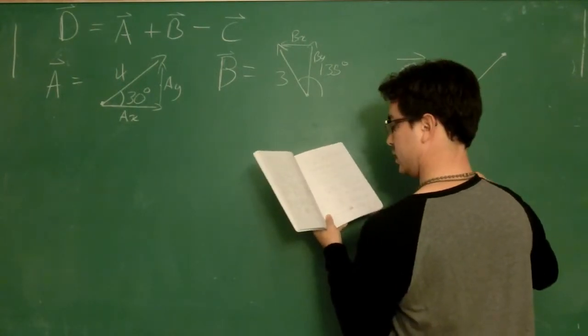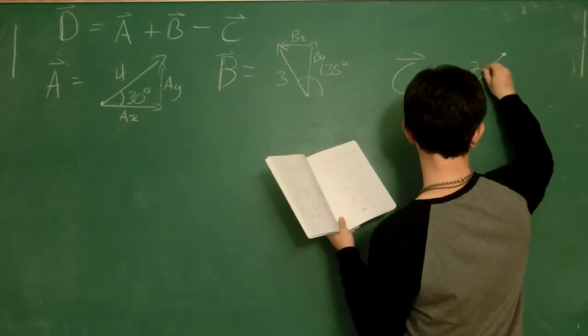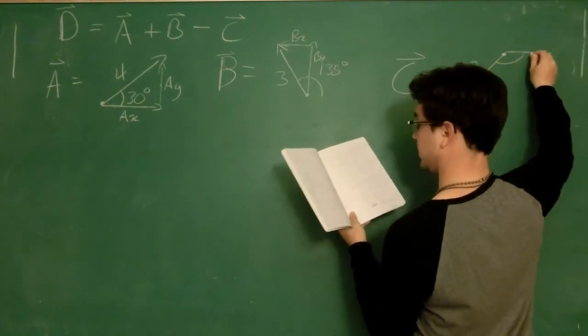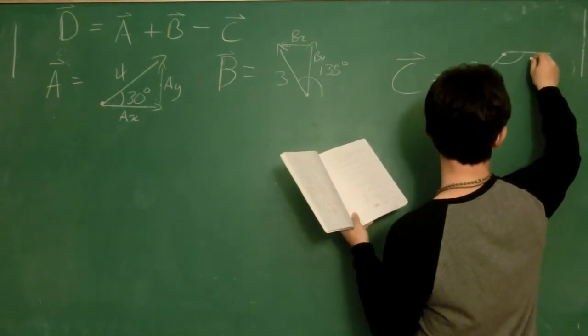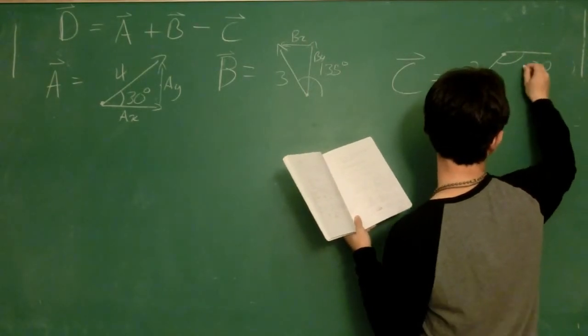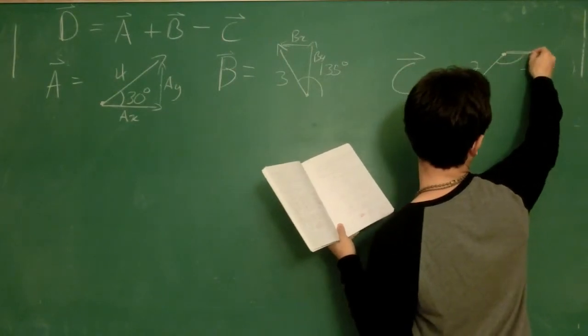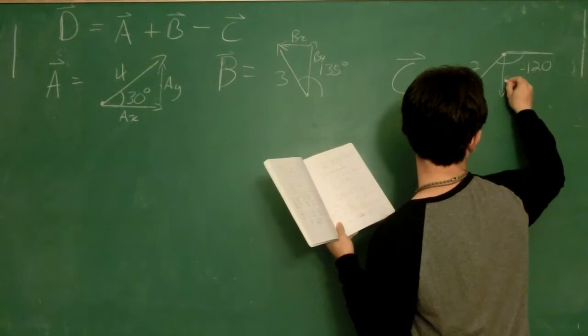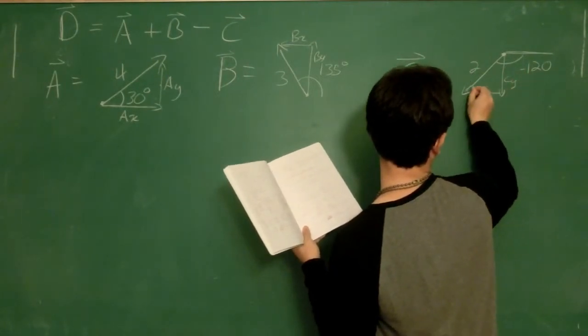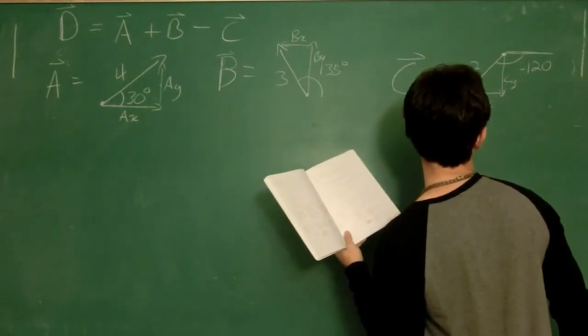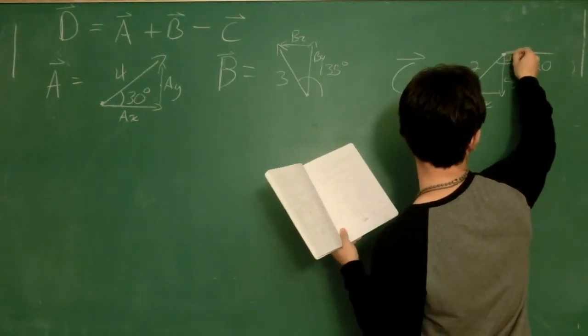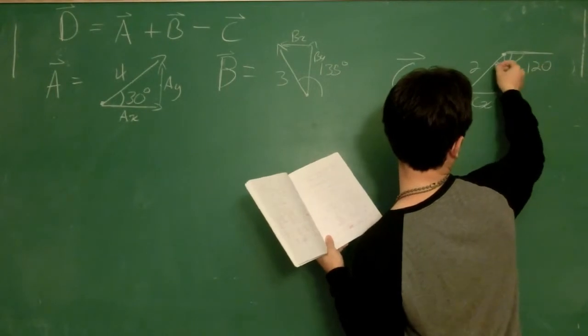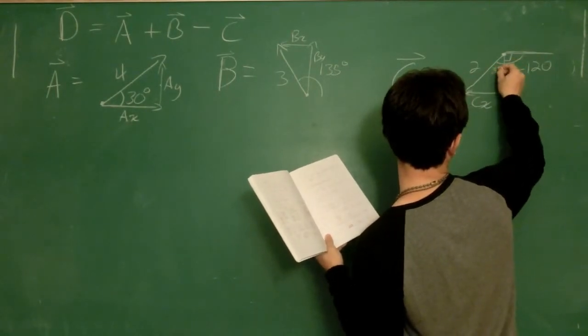So here's vector C. It has a total magnitude of 2, and it makes an angle over here with the positive x axis of 120 degrees. This is actually a minus 120 because it's underneath the positive x axis. I've got a y component here, C sub y, and an x component here, C sub x. And so with this being a 90 degree angle, we know that this right here is 120 minus 90 degrees gives me 30 degrees.